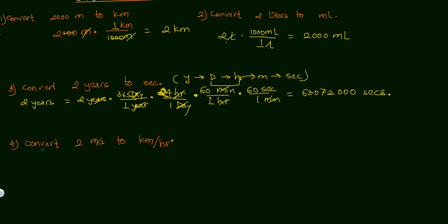Now for our final problem: converting a speed of 2 meters per second to kilometers per hour. We handle each unit separately. To convert meters to kilometers: put kilometers on top and meters on bottom. Since 1 km = 1000 m, the answer for the distance part is 2/1000 = 2 × 10⁻³ kilometers.